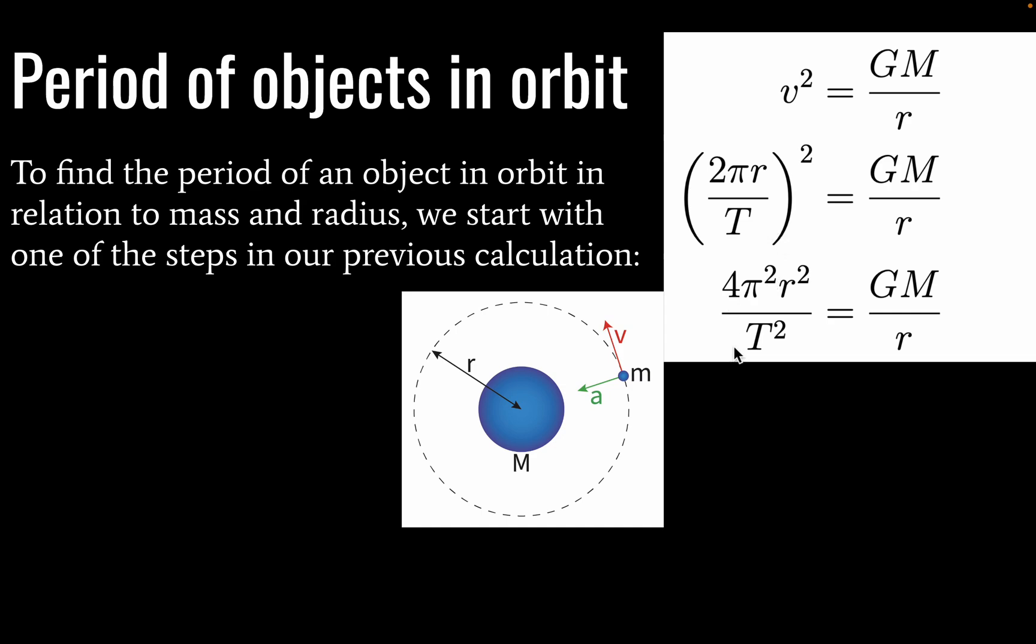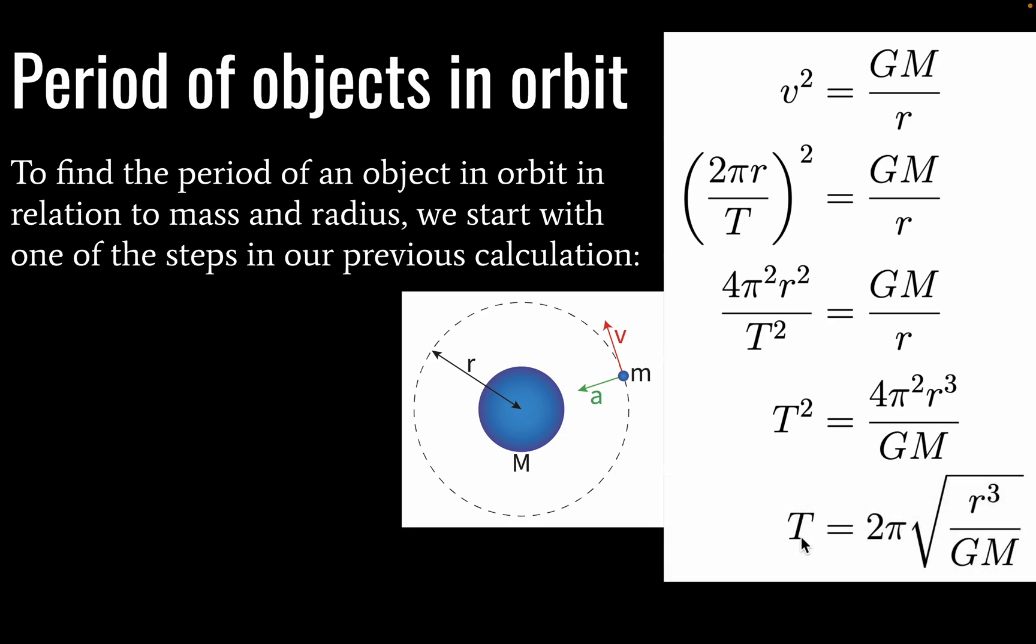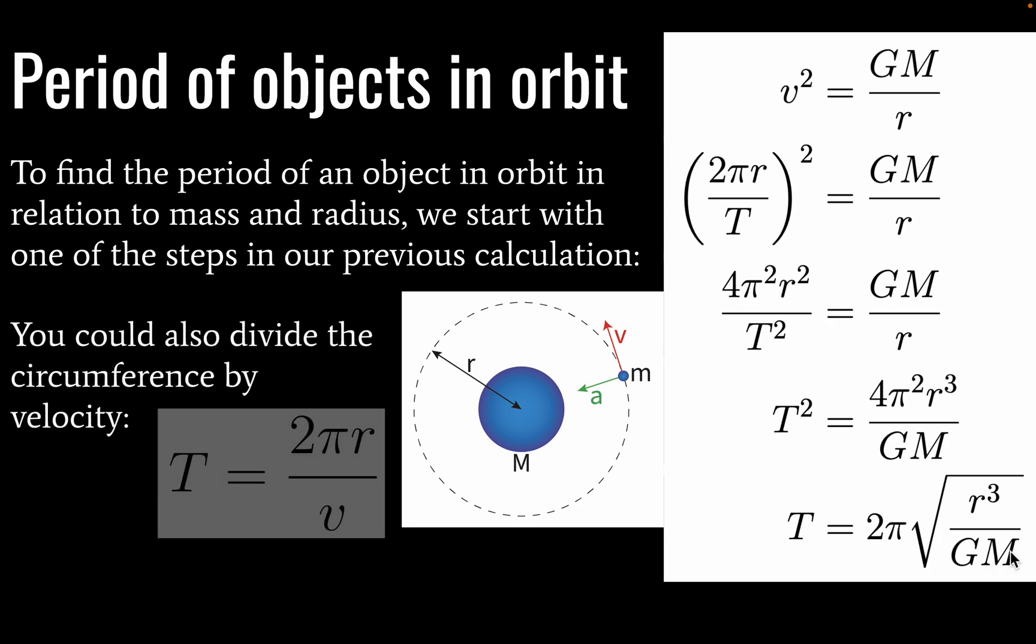We do a little more. We expand our exponents and get rid of the parentheses, and we get this form of the equation, and now we can solve for our period. Our period is equal to 2 pi multiplied by the square root of radius cubed divided by the gravitational constant times the mass of our large body. We can find the period. If we know the velocity and radius, here's a faster way. But if we don't know the velocity, this equation will work.